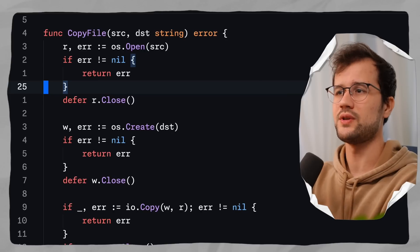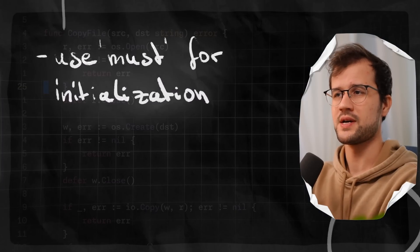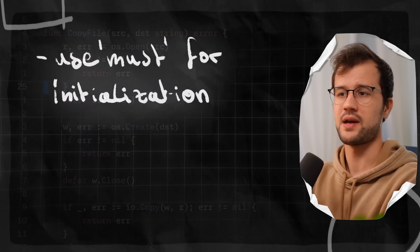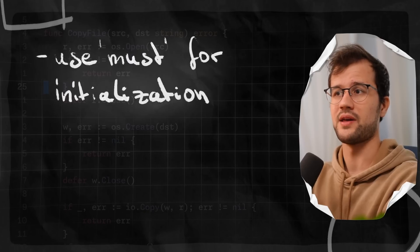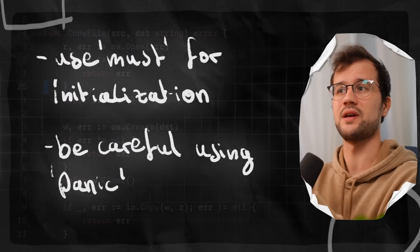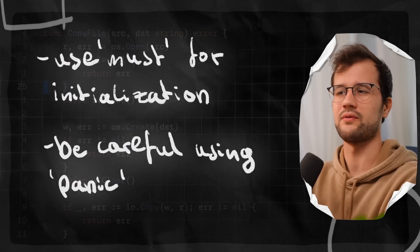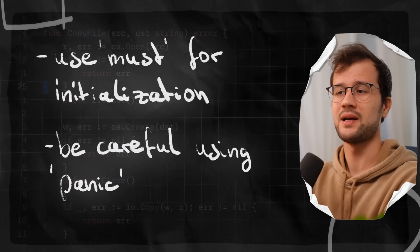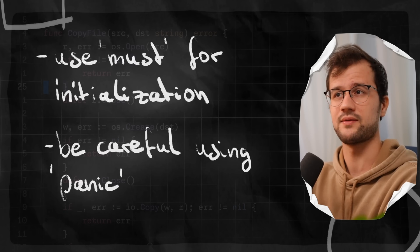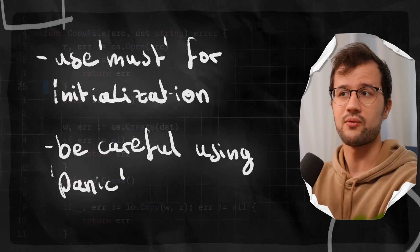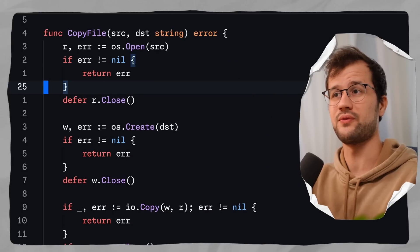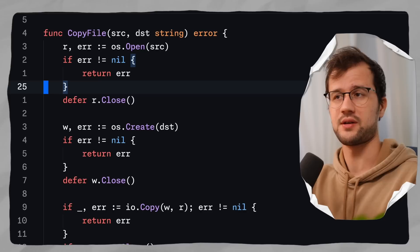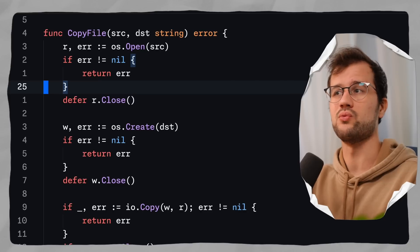What I really suggest using this must function for is initializing things where you expect them to succeed — like in the regex example where you expect the regex to compile. If you have user input, you do not really want to leverage the must function, because a downside is that it panics and terminates the whole application. The must function is really useful for initialization or testing logic, but be really careful whenever you want to use it.